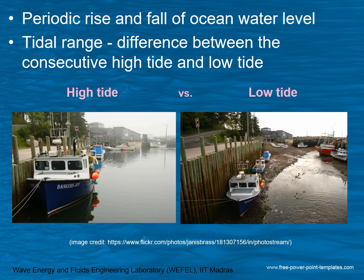The periodic rise and fall of ocean water level is called tides. The tidal range is the difference between consecutive high tide and low tide. A picture is provided which shows a high tide and low tide, where the water level has drastically decreased, as can be seen in the picture.